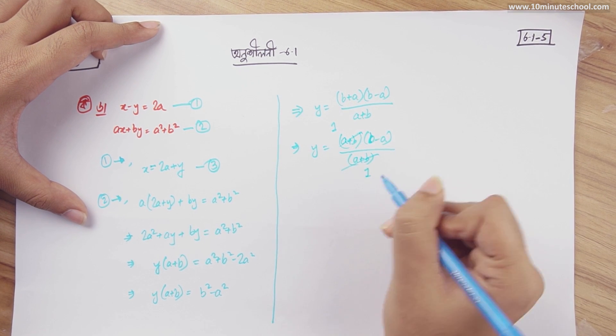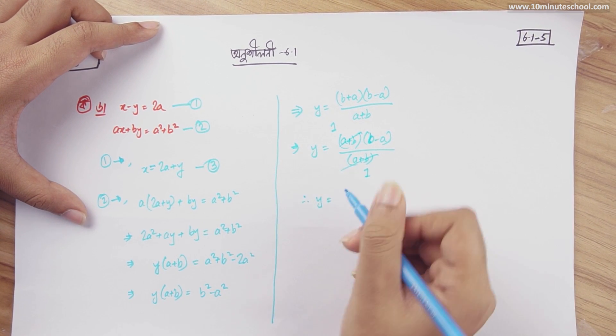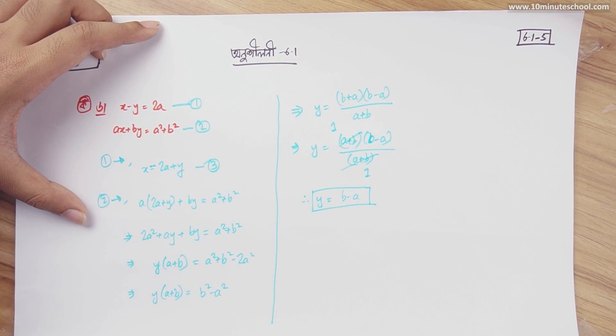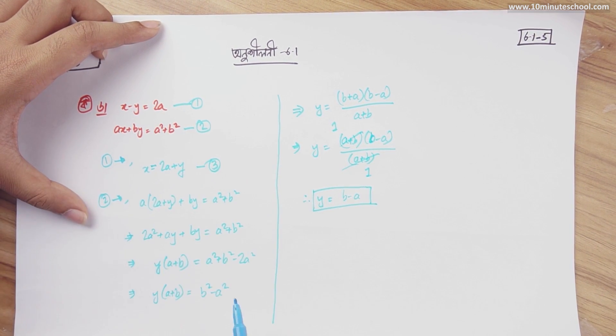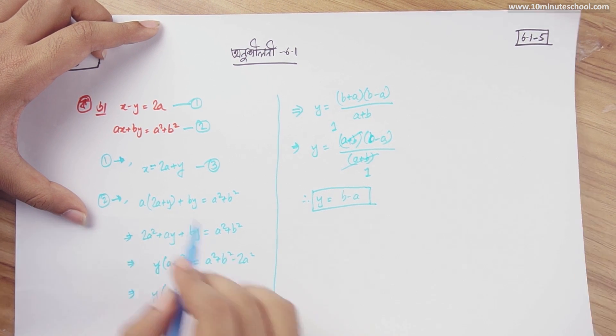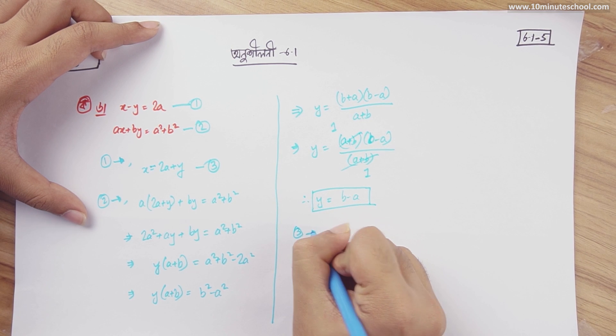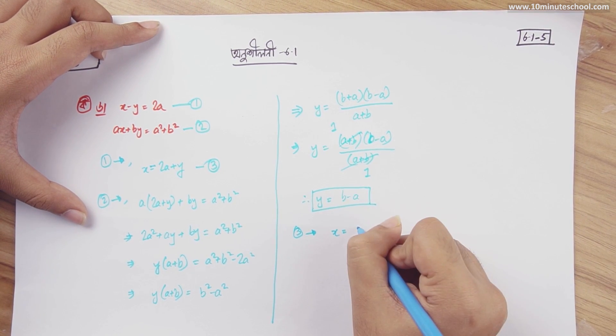So this is 1, this is 1. So y equals b minus a. Here we have the y, so we have to take this one.